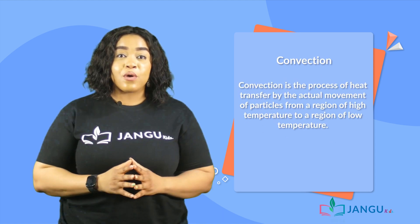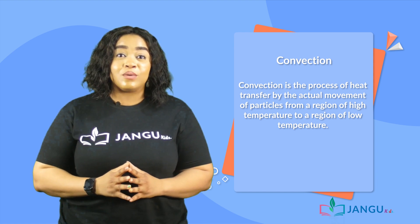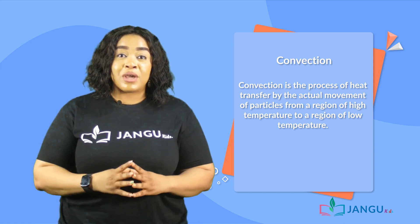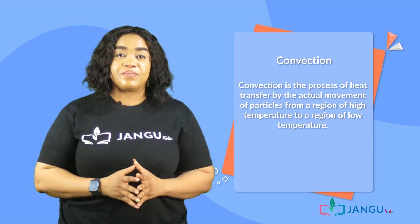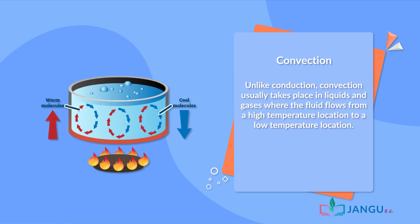Convection is the process of heat transfer by the actual movement of particles from a region of high temperature to a region of low temperature. Unlike conduction, convection usually takes place in liquids and gases where the fluid flows from a high temperature location to a low temperature location.